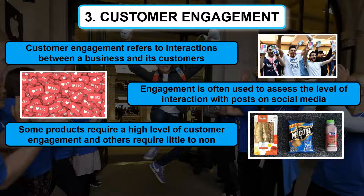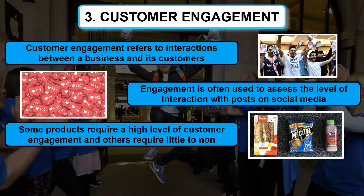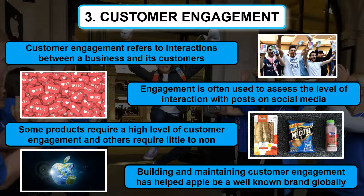Some products have lower levels of engagement required in the sales process. For example, you don't need much interaction with an employee at Tesco when deciding to buy a meal deal. However, if you are buying a three-grand Mac, then you would expect to engage with salespeople who build a level of trust and rapport with you. You may also engage with Apple online by seeking out information on their website and looking up YouTube reviews. Building and maintaining customer engagement has helped Apple become a globally known brand, with iconic adverts, products, and a service that has earned them a cult of highly engaged users.